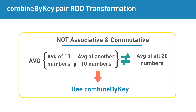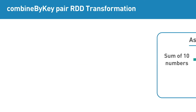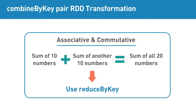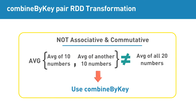For example, calculating sum is associative and commutative, which means we can sum the values within each partition and then sum the sum values. This is not the case with average, because calculating average of averages is not the same as calculating the average of all numbers. This is where combineByKey comes into picture.